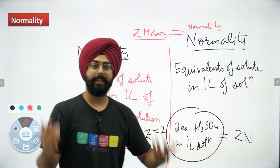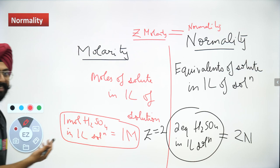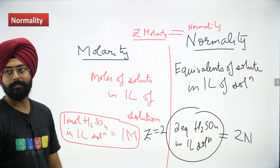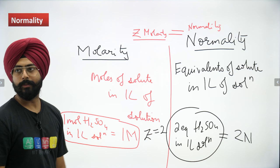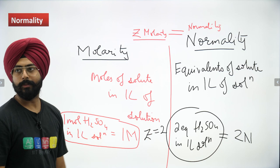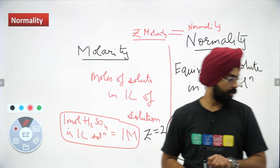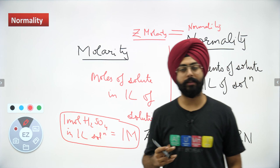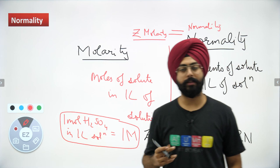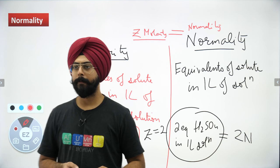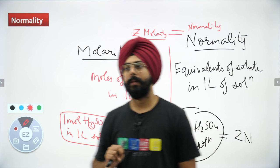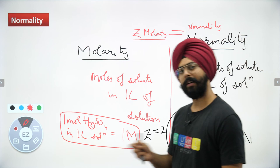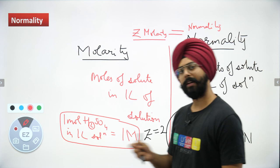The relationship is: Normality = z factor × Molarity. The z factor, also called n-factor or valency factor, multiplied by molarity gives you normality. This is as simple as that. Normality is defined as the number of equivalents of solute in one liter of the solution.